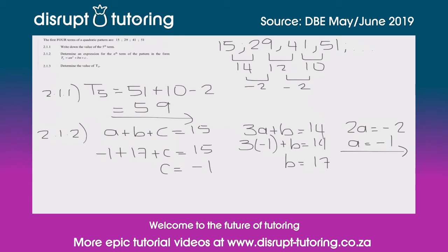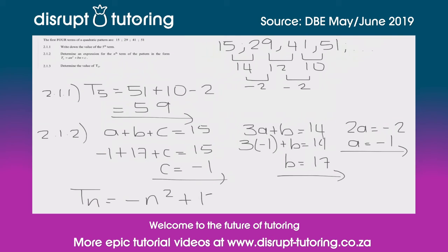We've solved for a, b, and c. Substituting into our equation, the general term is tn = -n² + 17n - 1. That is the general term for this particular pattern.